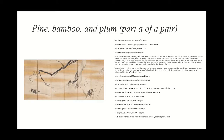The next record, 'Pine, Bamboo, and Plum,' is also Part A of a pair. If you look at DC identifier, it has 2021.2.2a and the other one will be .2.2b. If you look under DC terms, it says 'is part of,' so this is part of a pair — 2021.2.2b.